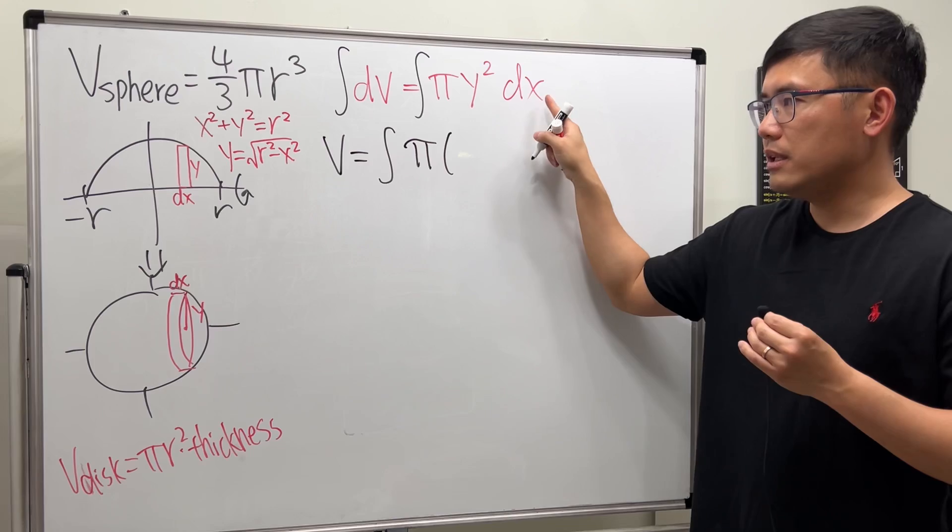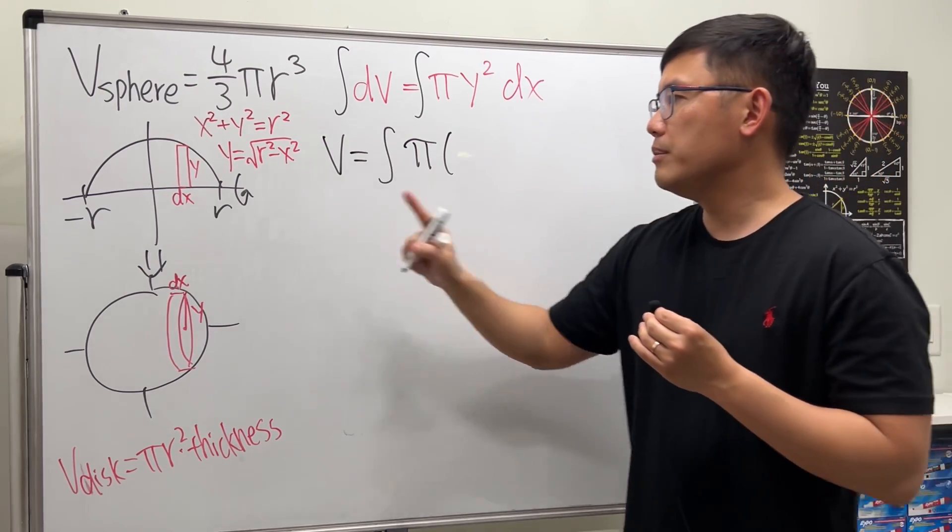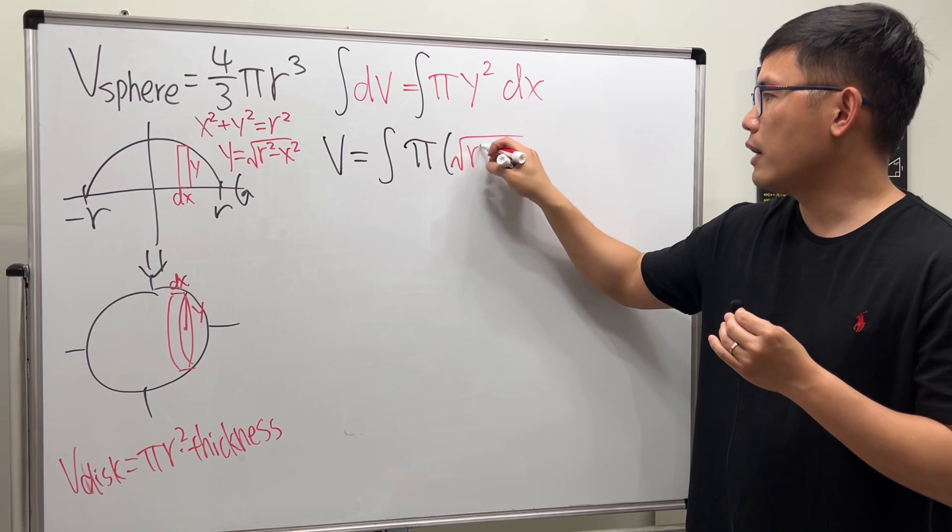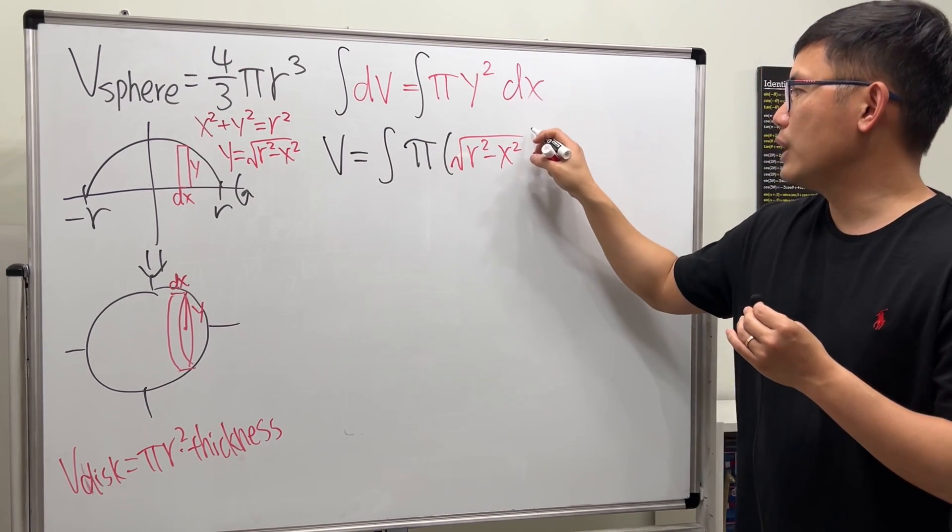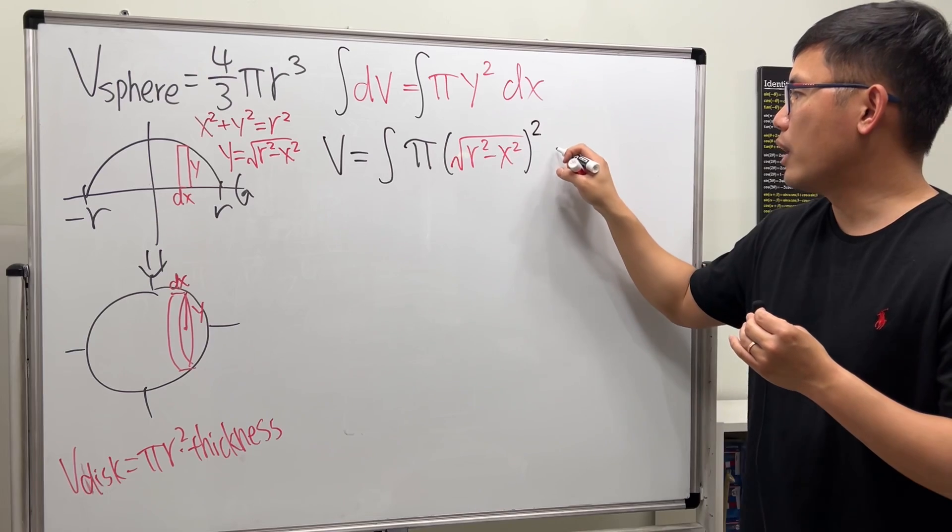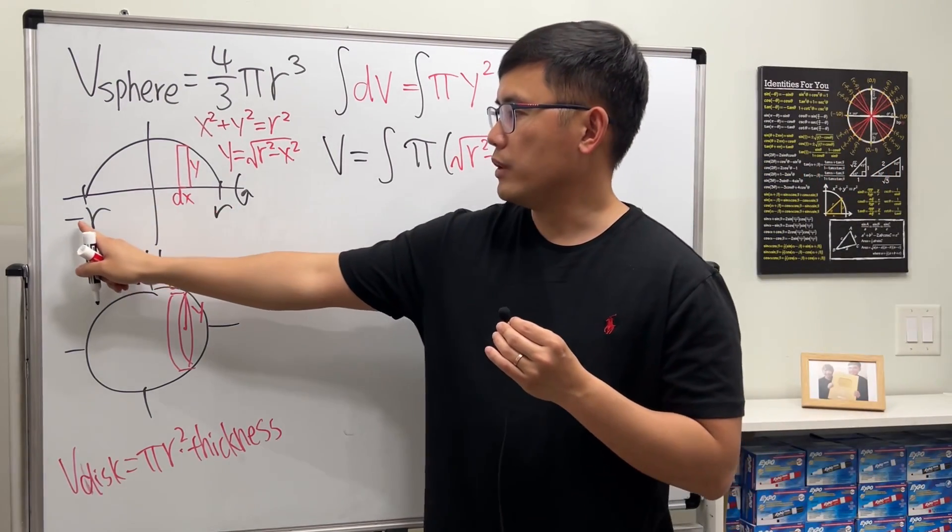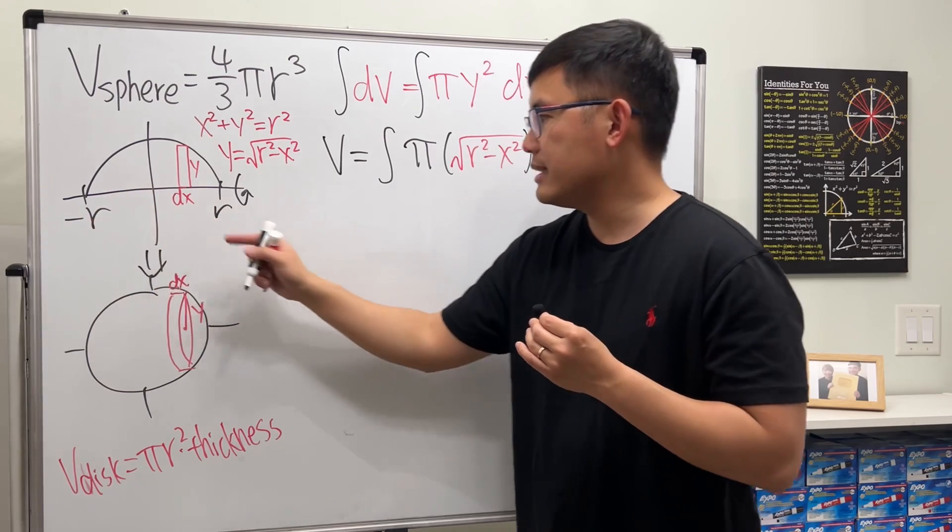π is π. Y is not allowed in the x world, but it's okay, because we know y is equal to this. So that's √(r² - x²). And then we still have a square right here. And we are in the x world. So, we look at this to that. We go from -r to r.